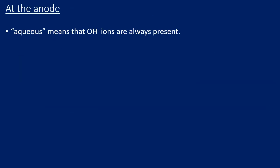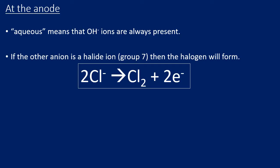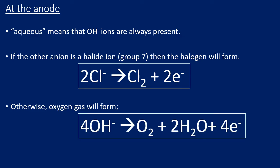At the anode, with aqueous solutions we also have hydroxide ions (OH⁻). If the other anion is a halide ion (Group 7), it is still the halogen that forms. Here, with chloride present: 2Cl⁻ → Cl₂ + 2e⁻. If the other anion is not a halide — for example sulfate or nitrate — then hydroxide loses electrons and forms oxygen and water: 4OH⁻ → O₂ + 2H₂O + 4e⁻. This bottom equation is from GCSE higher level and you just need to know it.